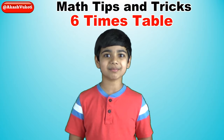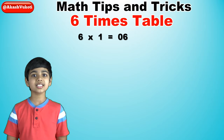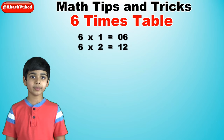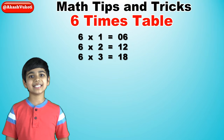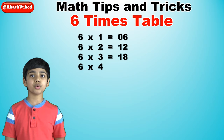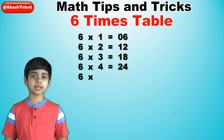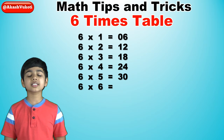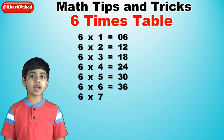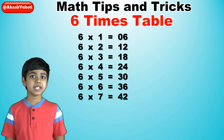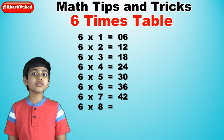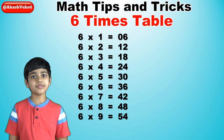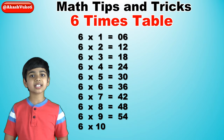If you already know it, say it with me. Six times one is six, six times two is 12, six times three is 18, six times four is 24, six times five is 30, six times six is 36, six times seven is 42, six times eight is 48, six times nine is 54, and finally six times ten is 60.